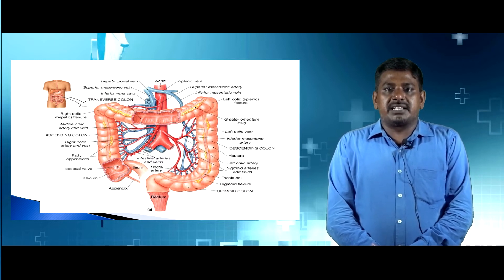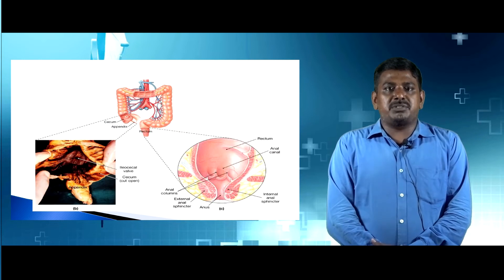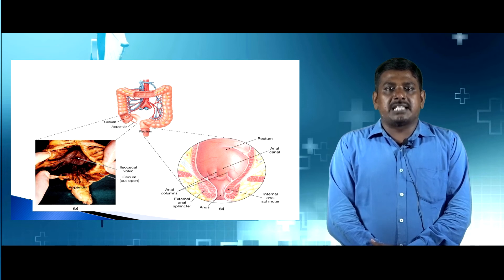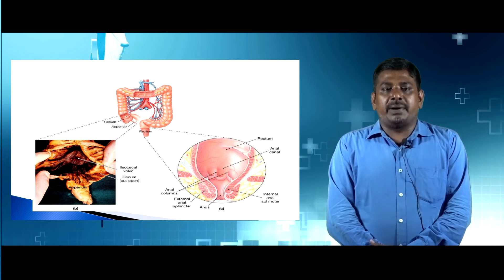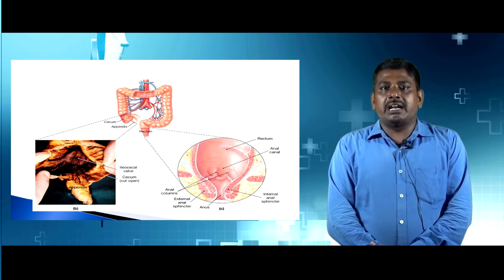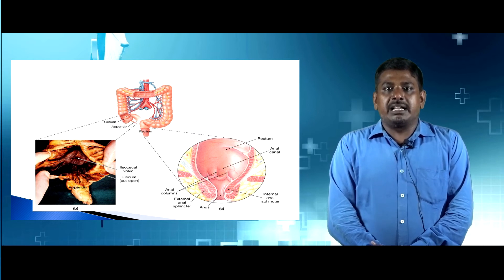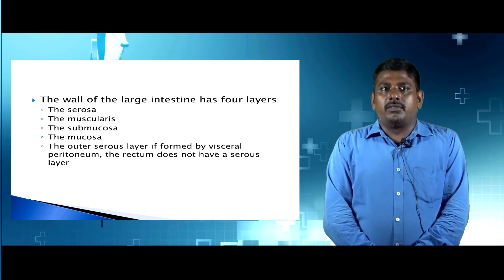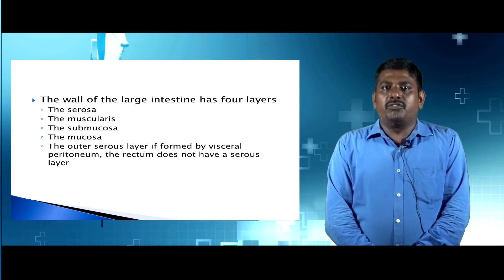The tenia coli and sigmoid flexure are also on the left side. The end part of the colon contains the rectum. The rectum is divided into two parts: the appendix and the anal region. The appendix contains internal parts including the ileocecal valve and cecum. The anal region contains the anal columns, anal canal, external anal sphincter, internal anal sphincter, and anus.